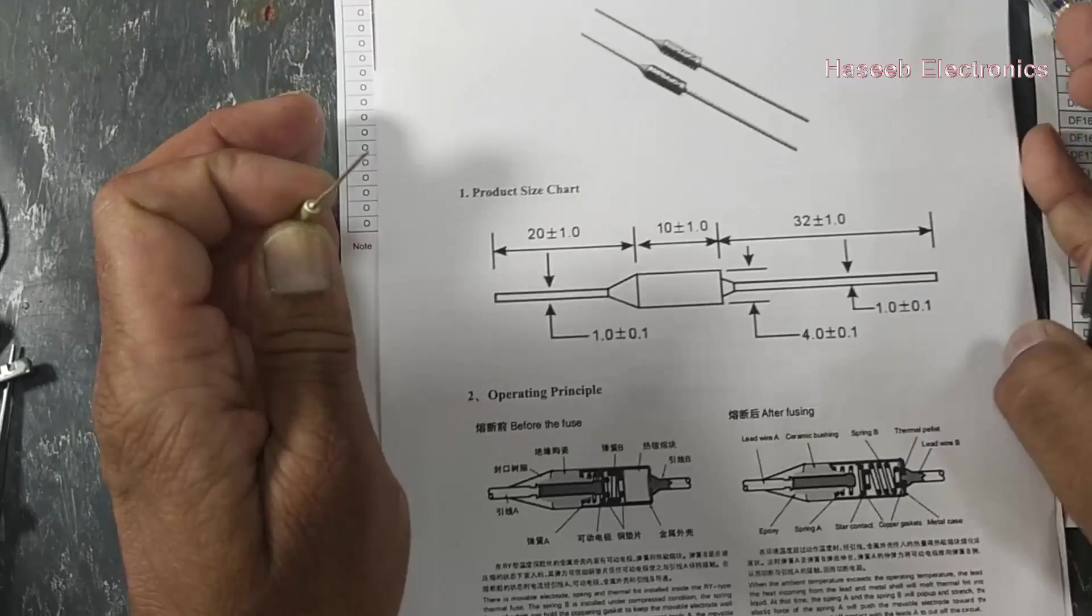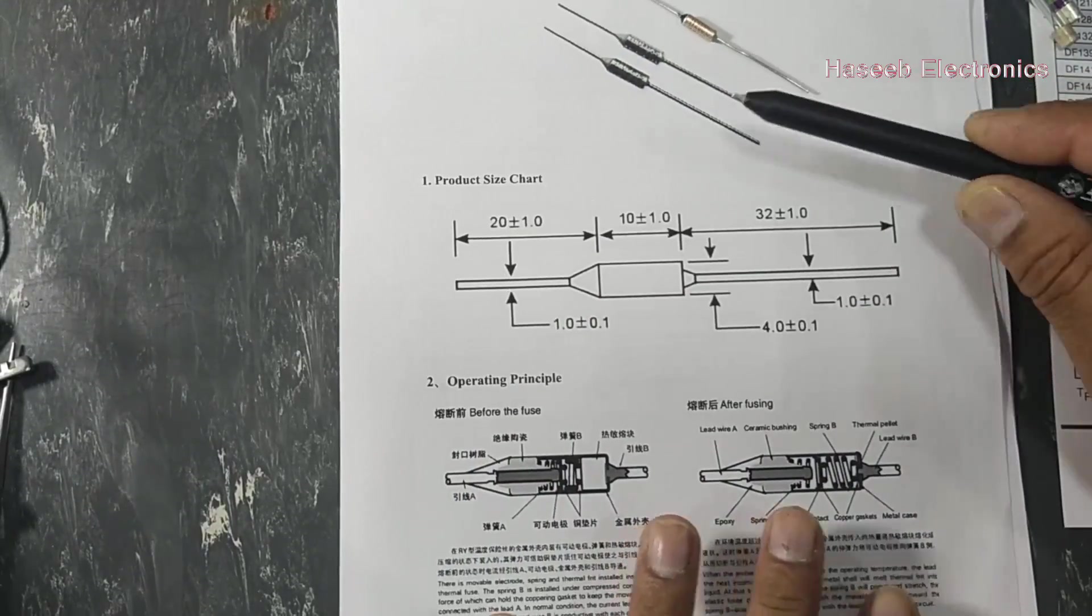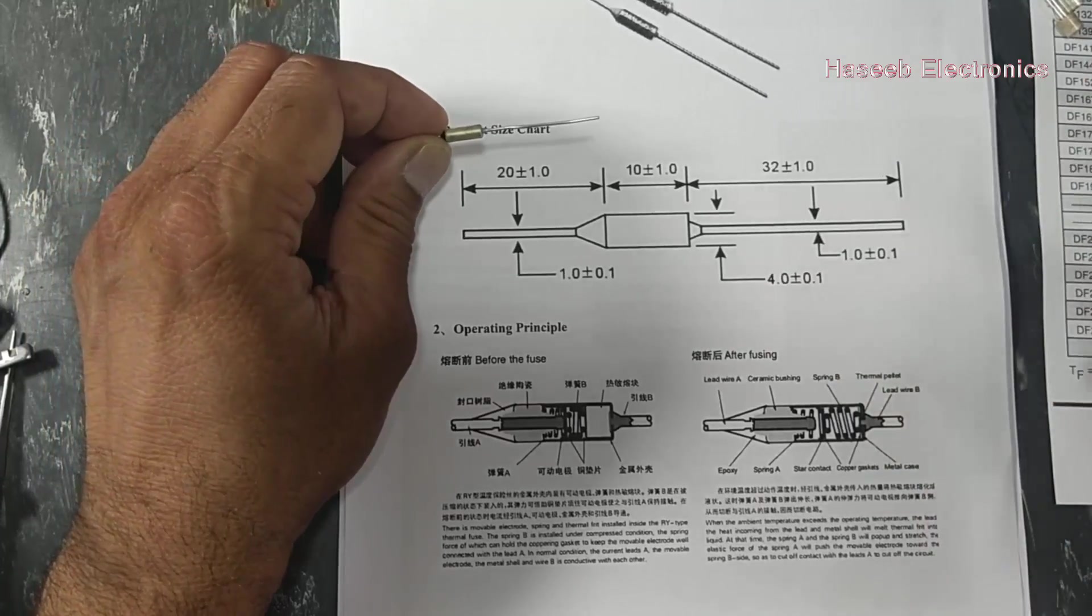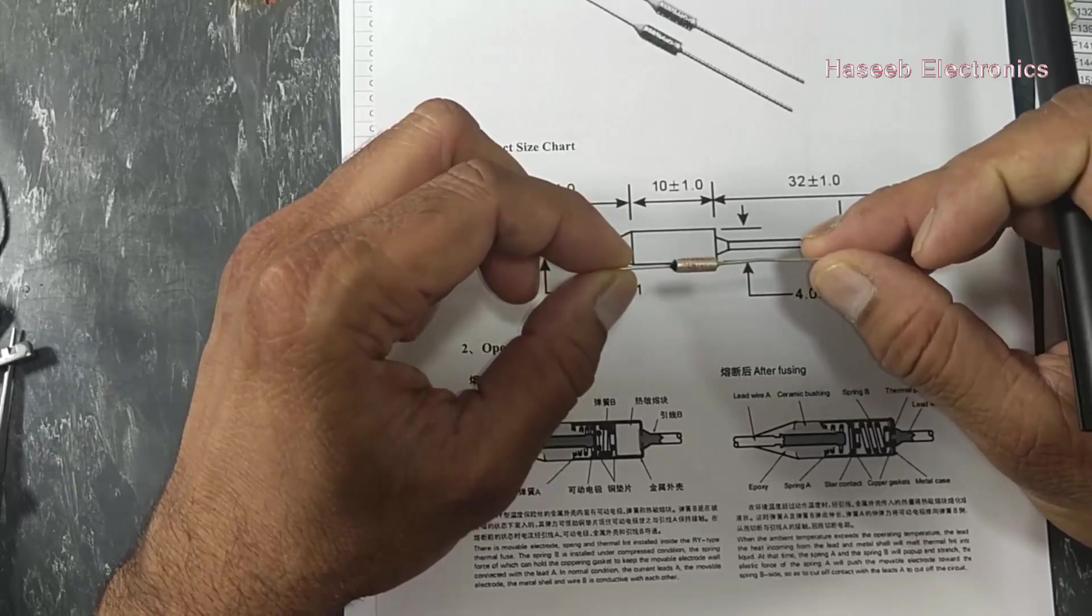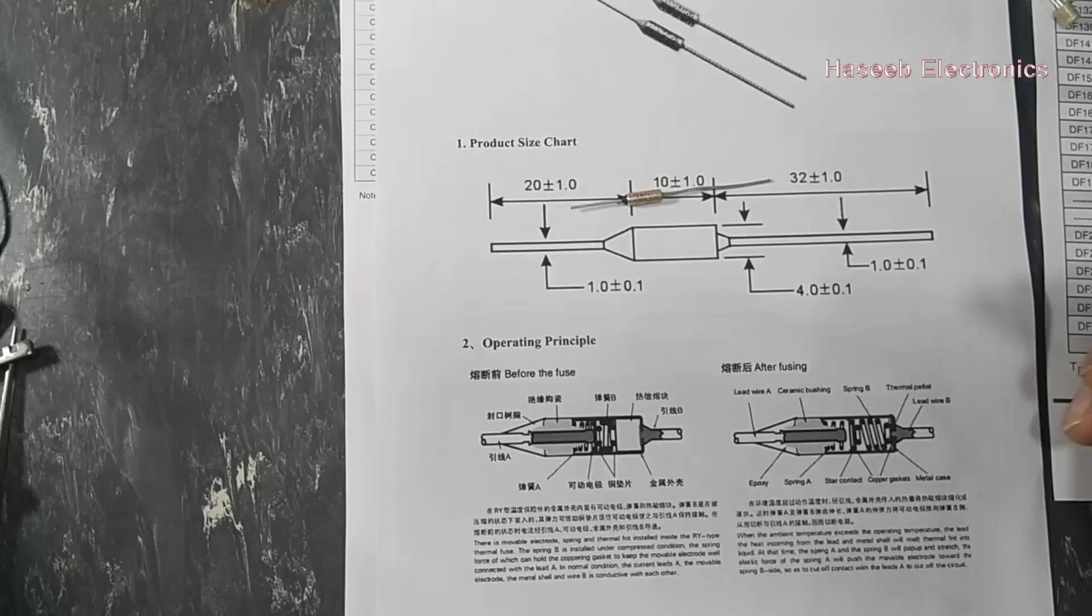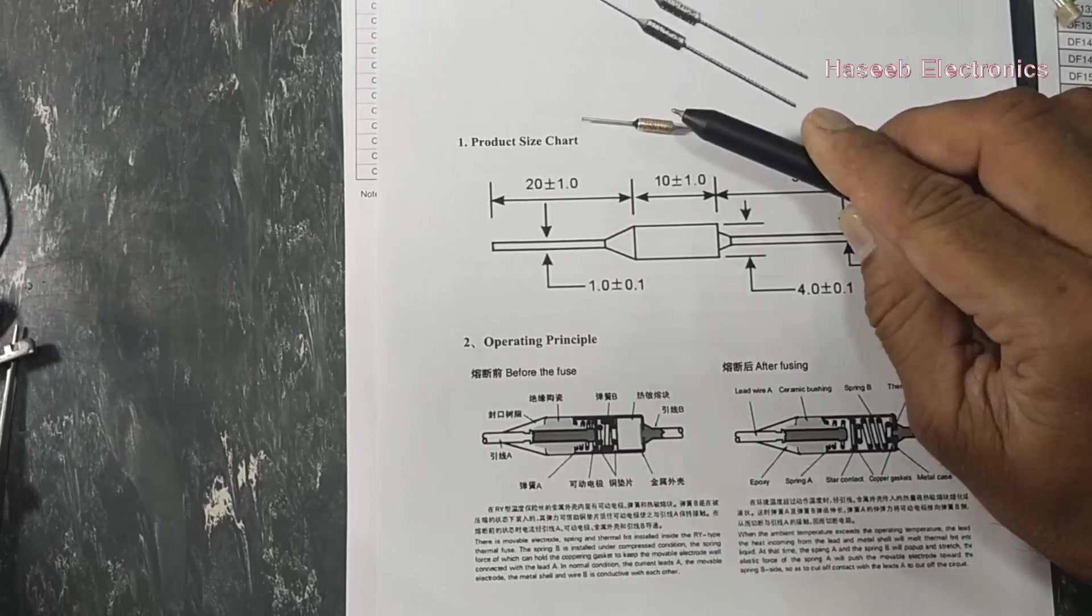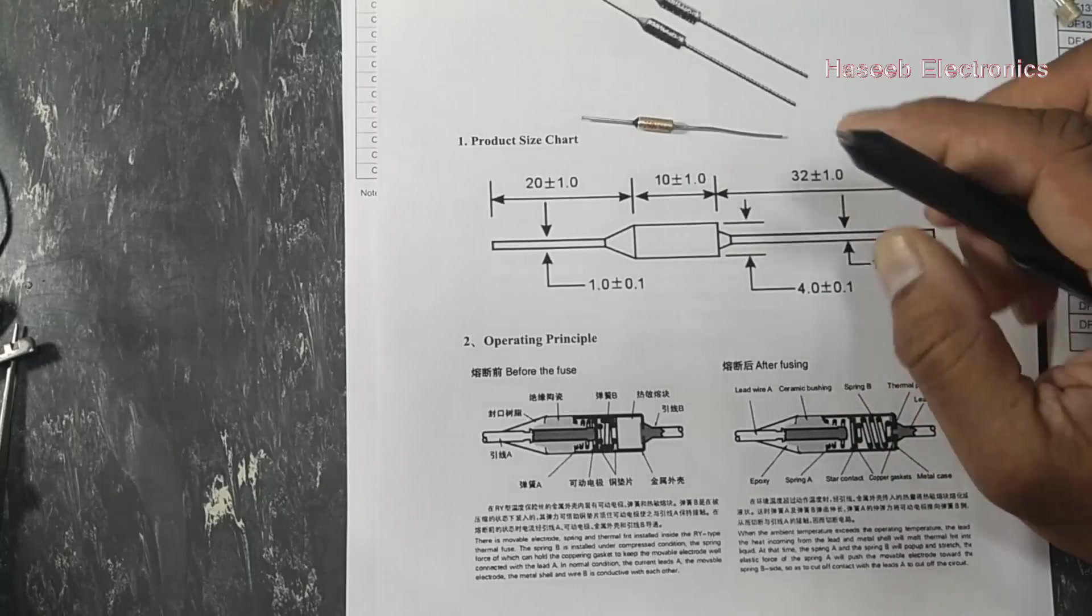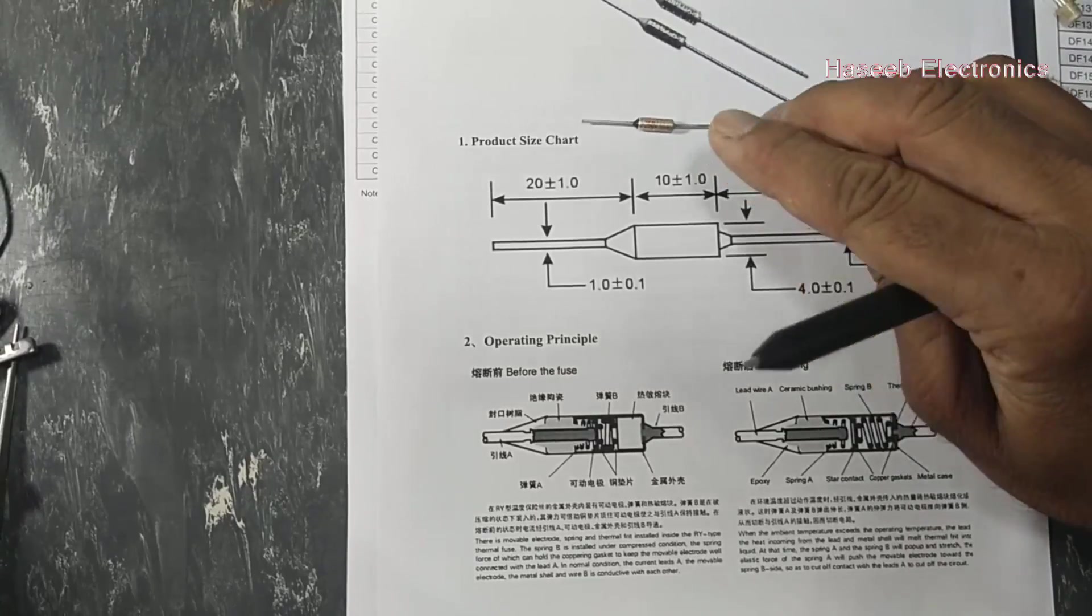From this RY 10 ampere series, if you see the datasheet it will give complete information about the fuse. Different dimensions are here. It is small in size and it is one-time use. When it burns out, it's because it is a second layer of safety. In the first layer maybe we will find a fuse in the outer body, but this is installed inside the unit near the heating element.